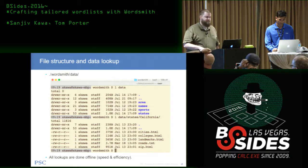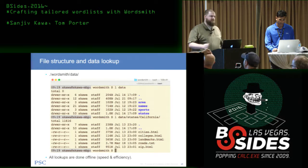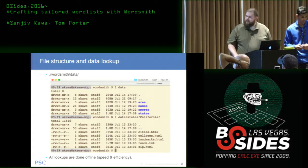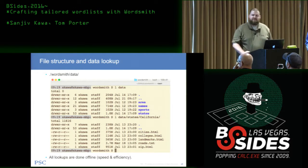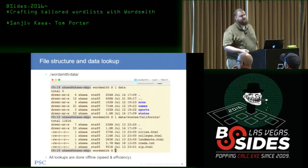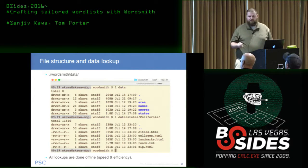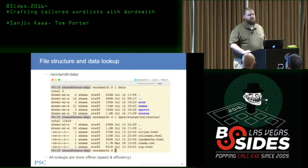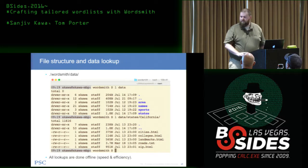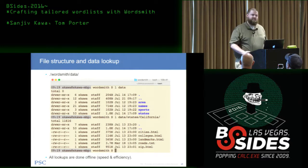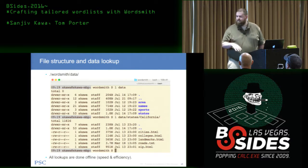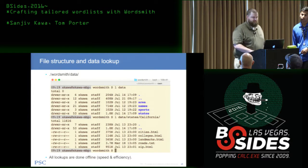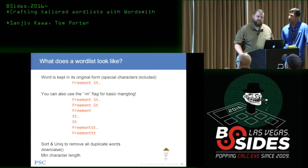At the top level of the data directory you'll see area codes, names pulled from the U.S. Census — first names, last names, baby names — sports, which are mostly the big four sports in each state, and then the states themselves. In the California directory, for example, you'll find cities.html, colleges.html, landmarks, roads, and zips — all words specific to that state. These are actual HTML source files pulled from internet sources. We've added an update option, the dash-U flag, so you can later re-pull all sources and update your local data. Parsing uses gems like Nokogiri and Spyder, and all lookups are done offline for speed.